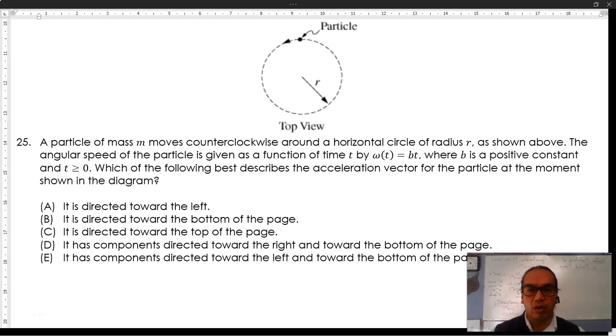25. A particle of mass m moves counterclockwise around a horizontal circle of radius r, as shown above.